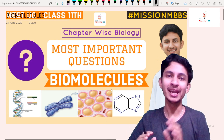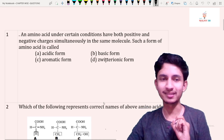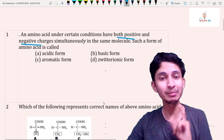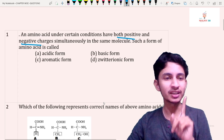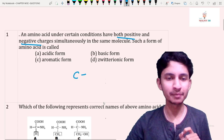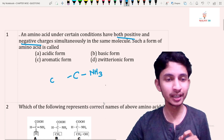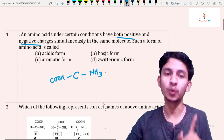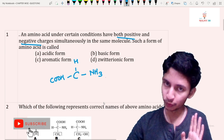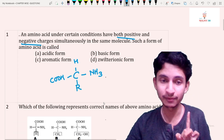Question number one: an amino acid under certain conditions can have both positive and negative charges simultaneously in the same molecule. Such a form of amino acid is called — amino acid contains an amino group (NH3) and an acid group (COOH). The carbon is tetravalent; to satisfy its valency there is an H group, and different amino acids vary because of the variable R group.